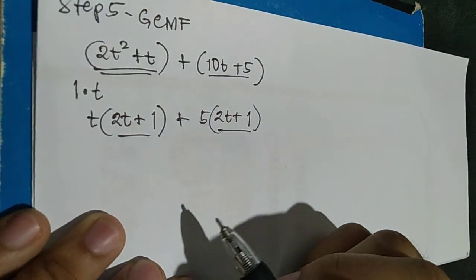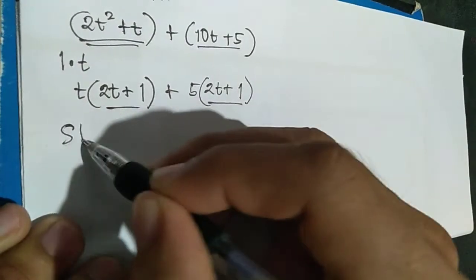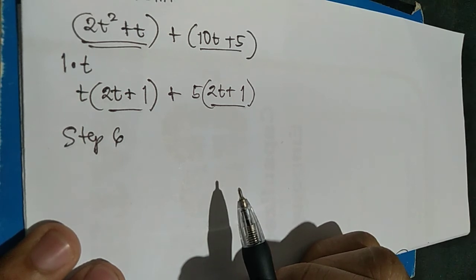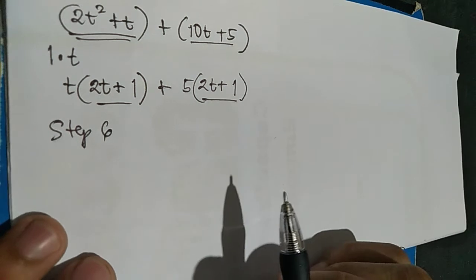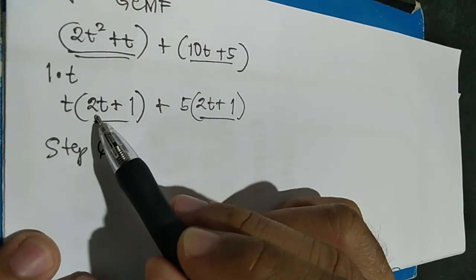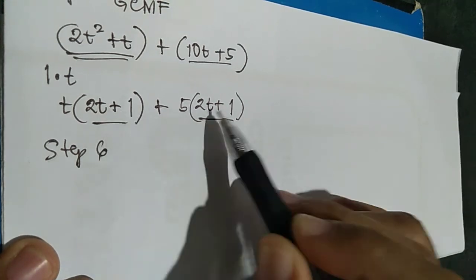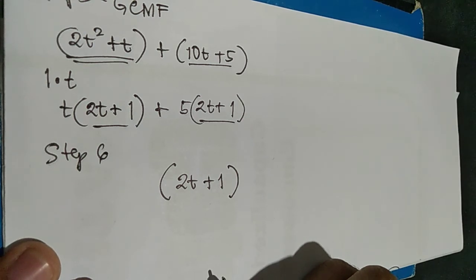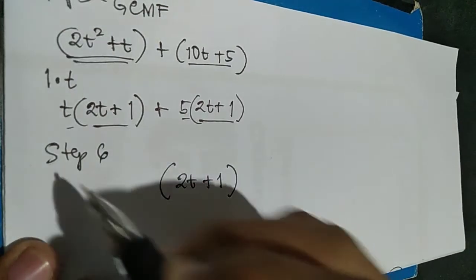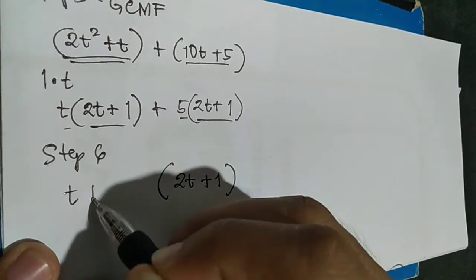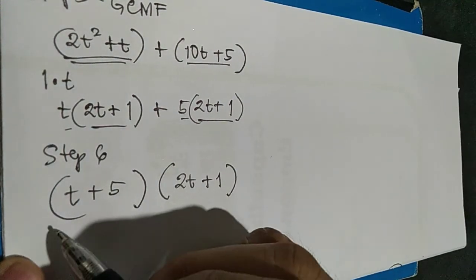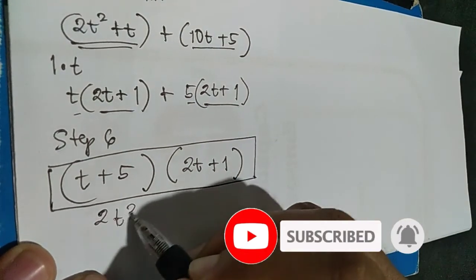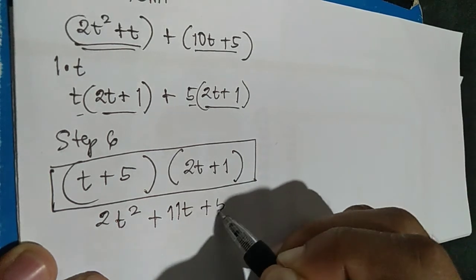As you can observe from Step 5, the common binomial factor is 2T plus 1. Step 6: factor out the common binomial factor and write the remaining factor as a sum of the common monomial factors. Combining, the common binomial is 2T plus 1, and the remaining factors are T and 5, giving T plus 5. Therefore, the factors of 2T squared plus 11T plus 5 are the quantity 2T plus 1 times the quantity T plus 5.